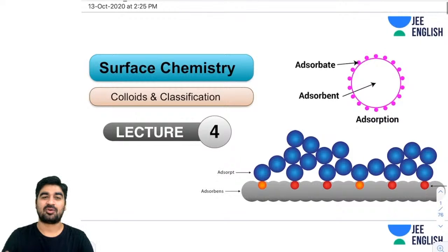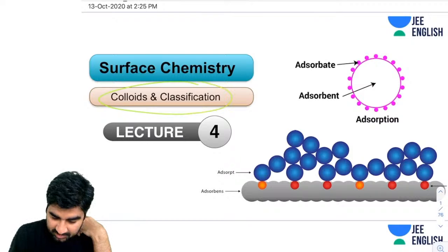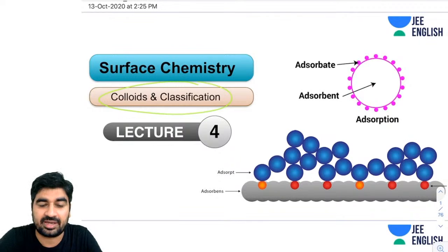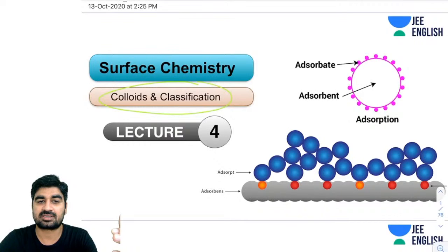Hello and welcome to Unacademy JEE English. I am Rahul Kaushik, and today I am going to take lecture number four on surface chemistry. We will be starting lecture number four, and today I am going to cover colloids and their classification. I will discuss what a colloid is and how a colloid is different from a true solution as well as a suspension.